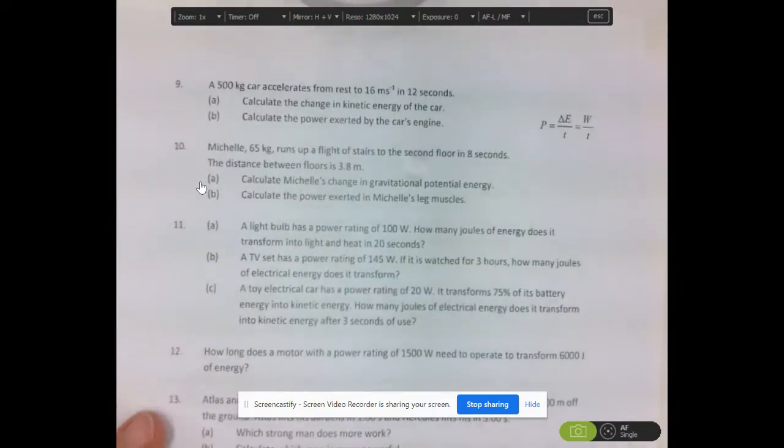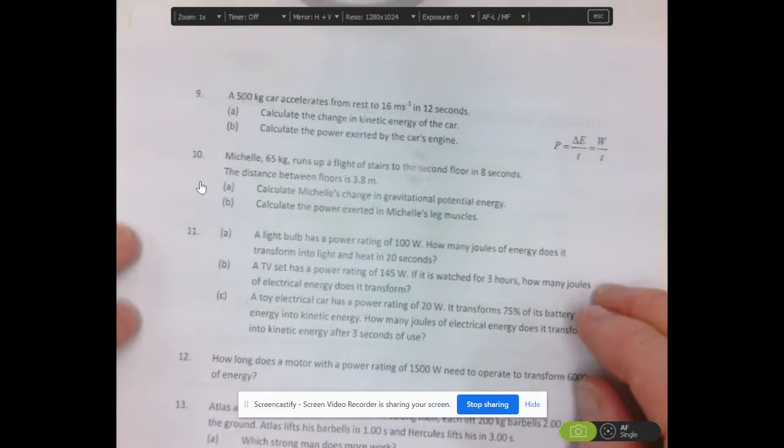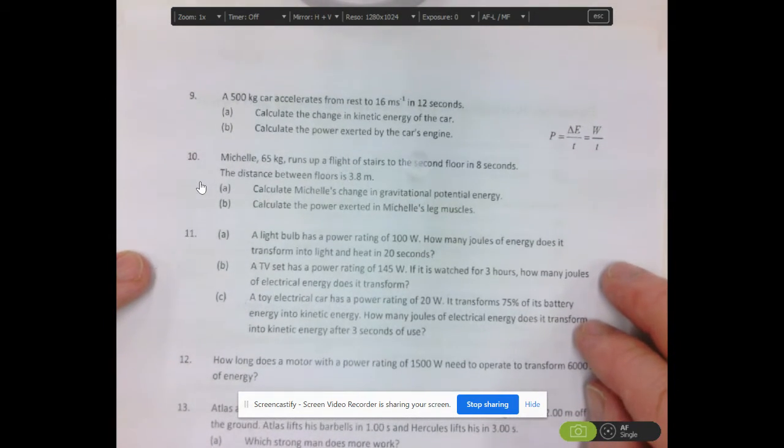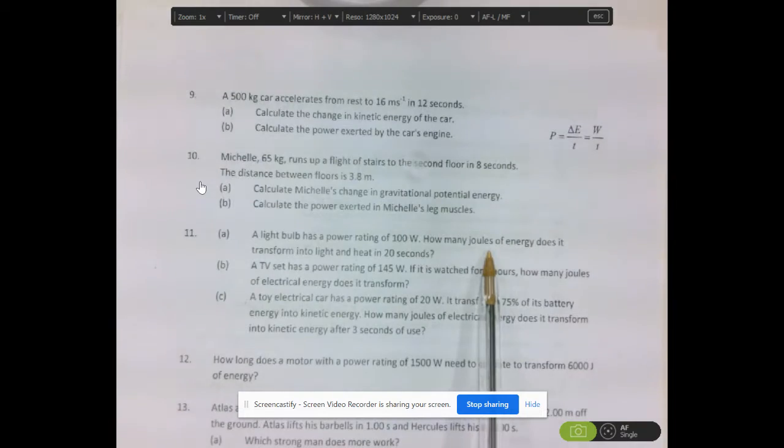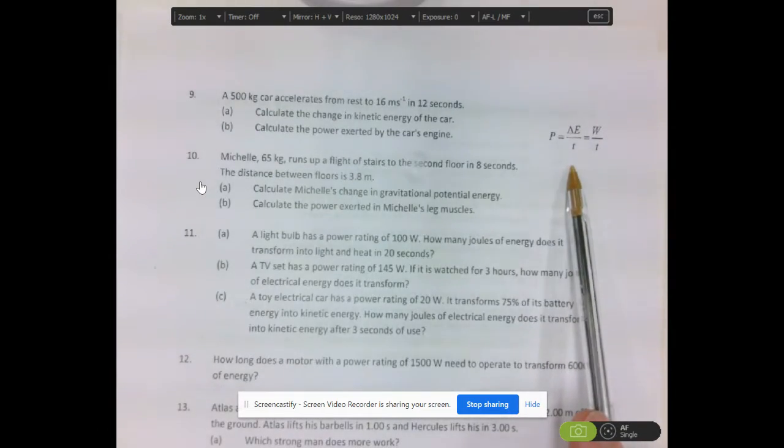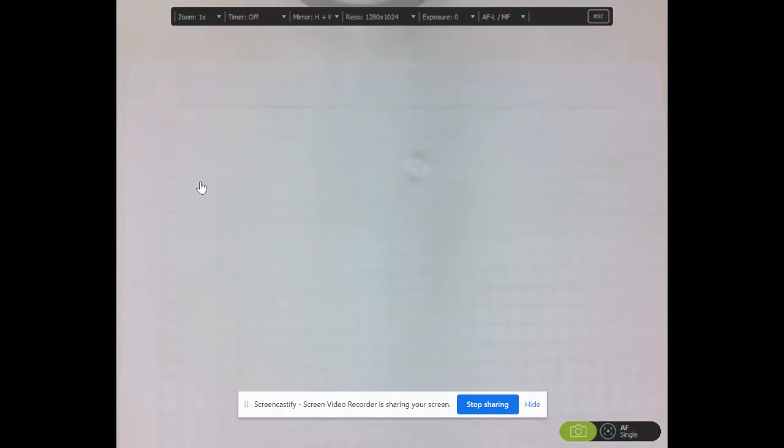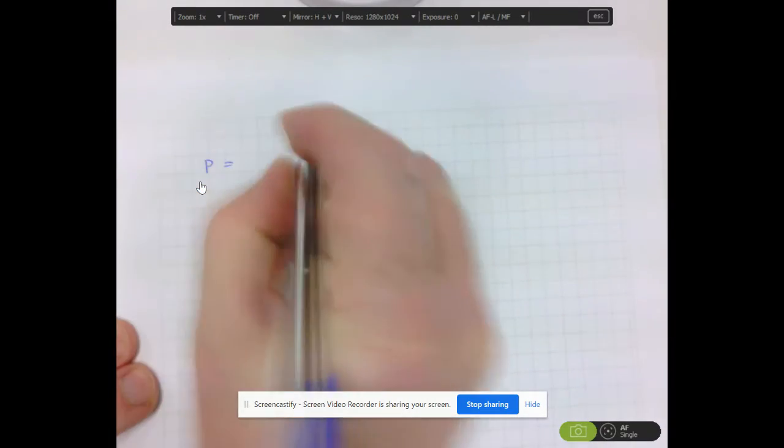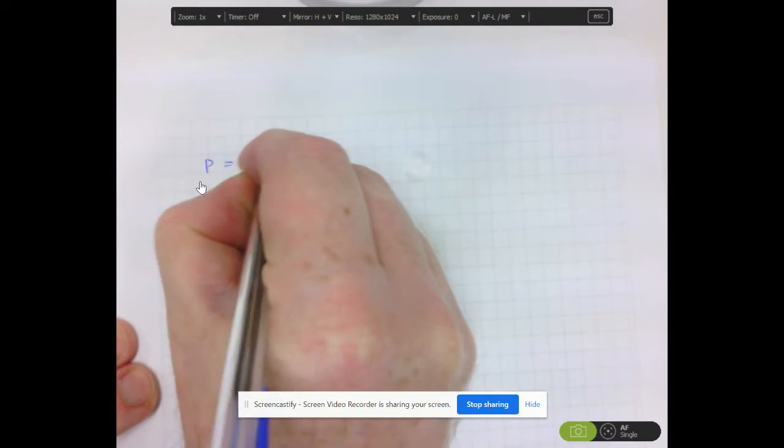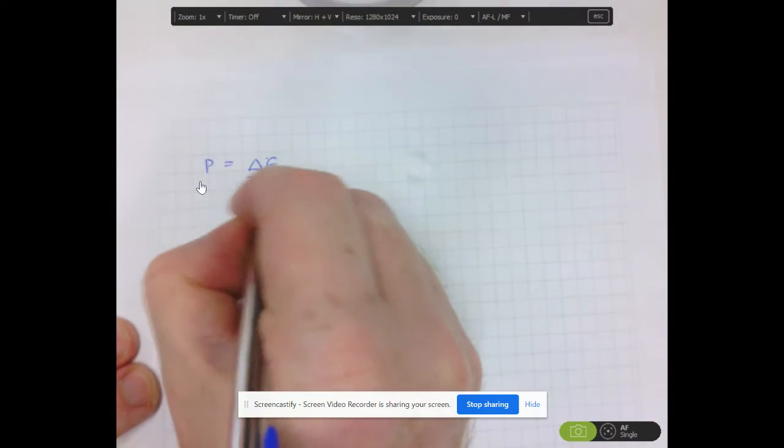Starting with question 11 now, this is looking at different forms of transformations. Question 11a says that a light bulb has a power rating of 100 watts. How many joules of energy is being transformed in 20 seconds? These questions here are a rearrangement of the initial power formula. Our power formula says that power is equal to the change of energy or the transformation of energy per time.